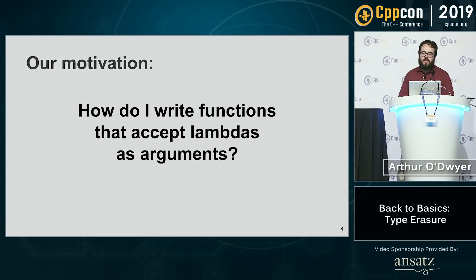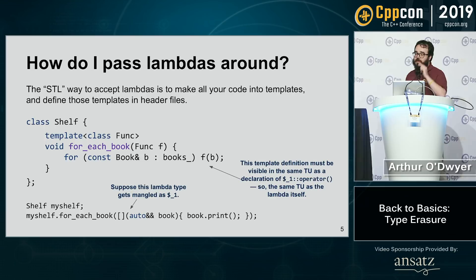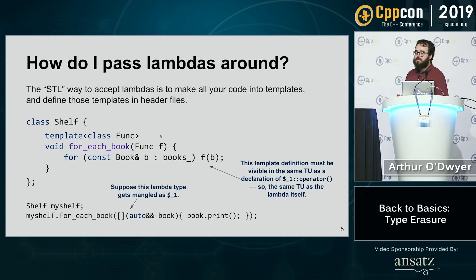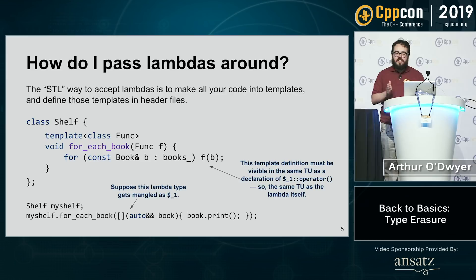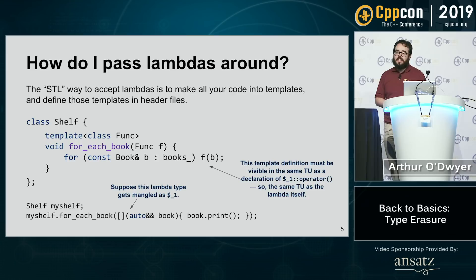In C++, we can motivate this idea of type erasure by asking the question: how do I write functions that accept lambdas as arguments? The STL way is to make a function template — it takes a type parameter, and whatever kind of thing you pass in, the compiler stamps out a copy of the template instantiated for that specific function type. If you pass in a lambda of one type, you get one instantiation; a different lambda type gives a different instantiation.